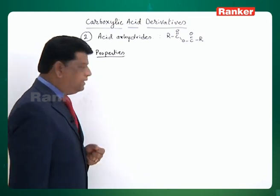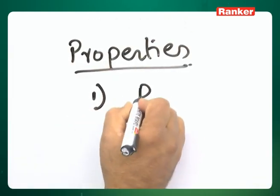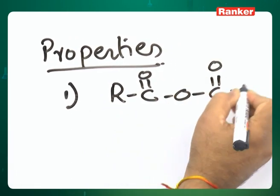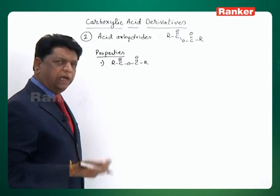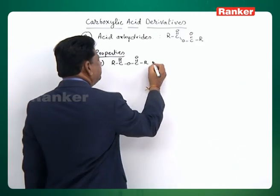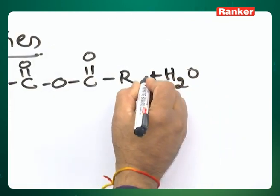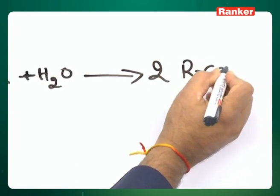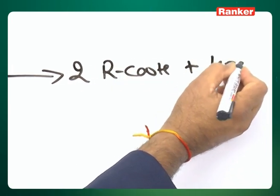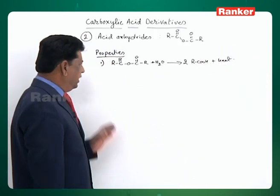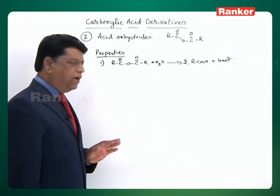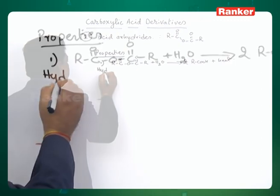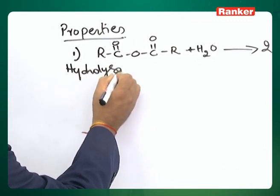Now let us look at properties of these anhydrides. The first property: anhydrides are very reactive towards water. All anhydrides, including cyclic anhydrides, react with water and open up into acids. Just by adding water — no heating, not even a catalyst — two moles of carboxylic acid are formed plus liberation of heat. This shows anhydrides are more reactive and less stable compared to carboxylic acids. This is a spontaneous hydrolysis reaction.